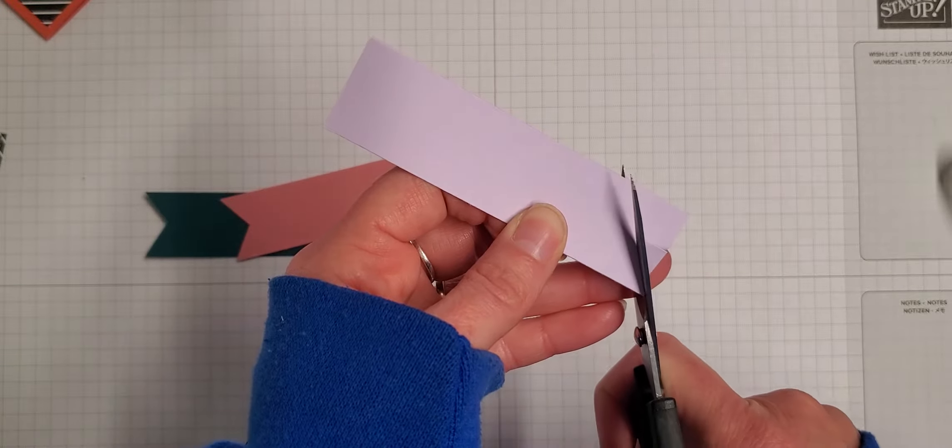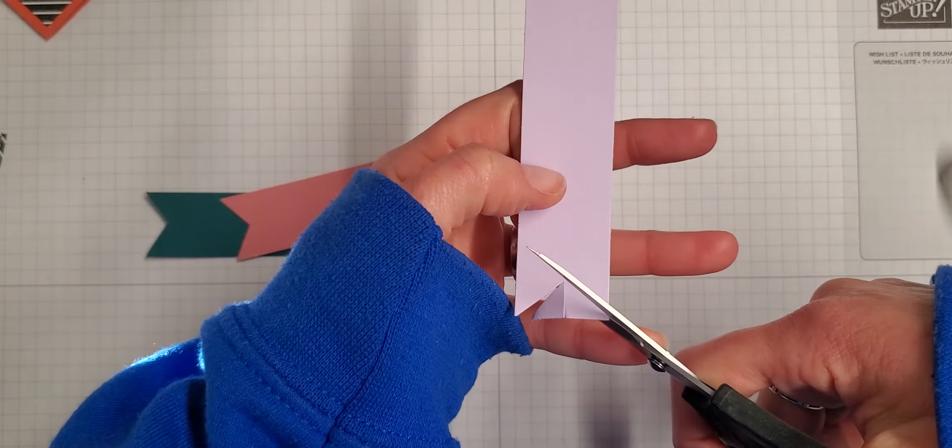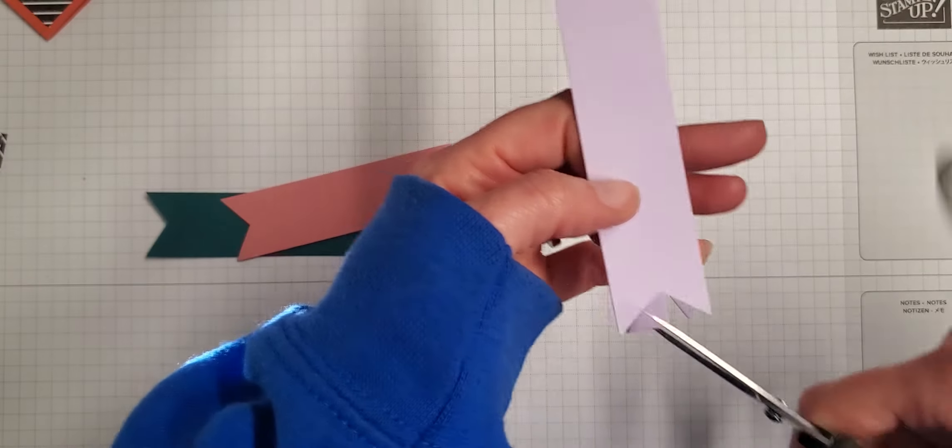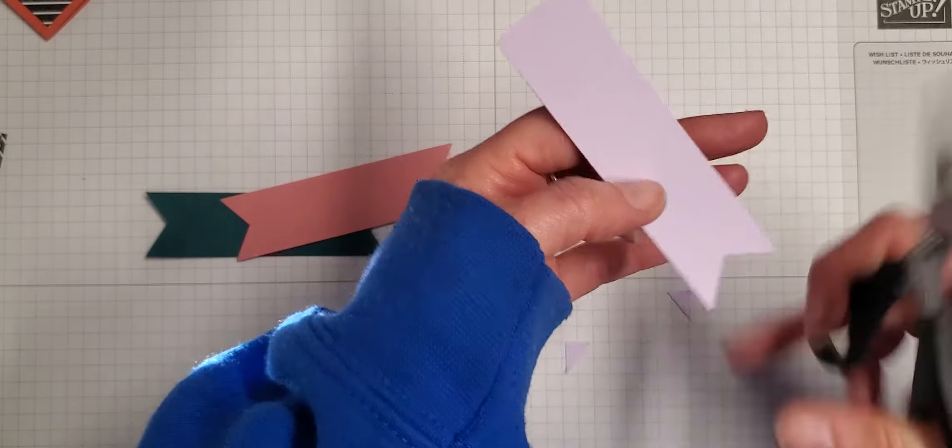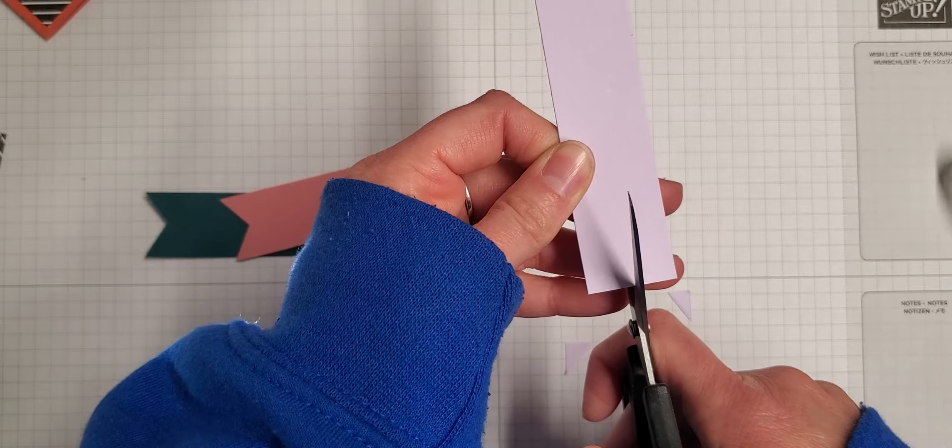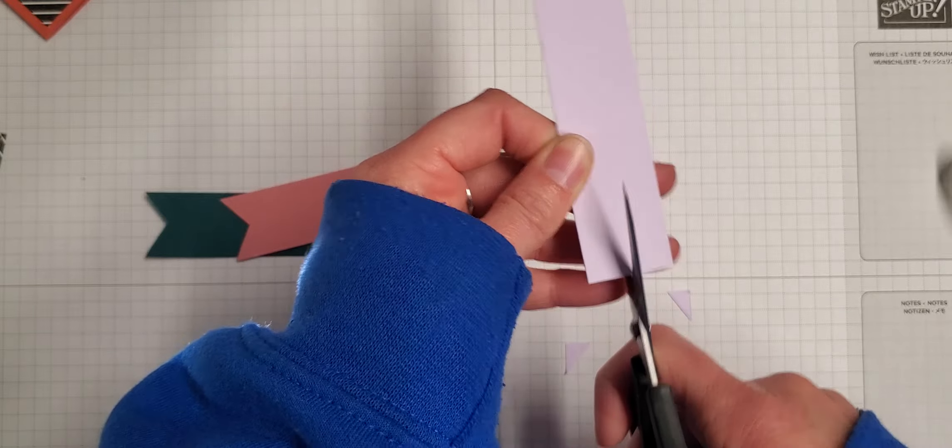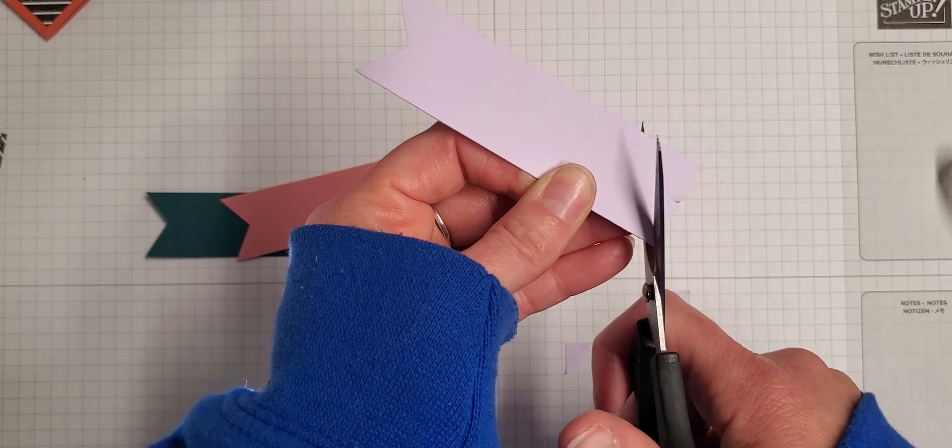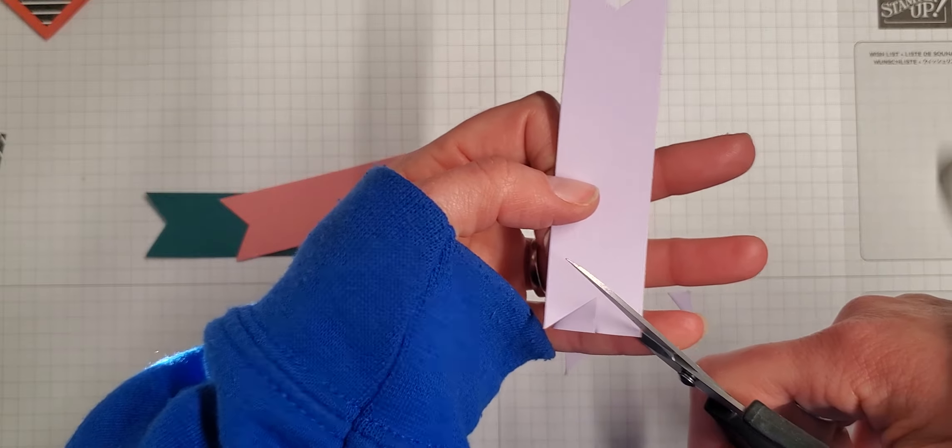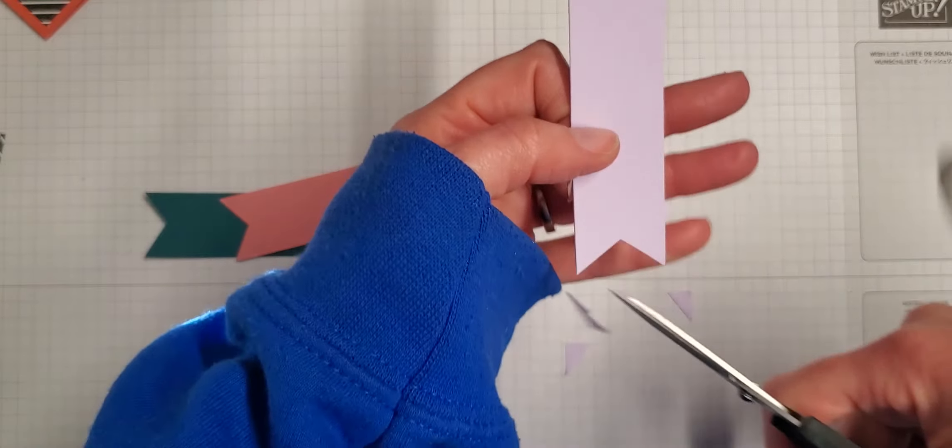And then we have Purple Posy. Now remember we had some issues with the Purple Posy ink pad so we don't have an ink pad or refill for this color, but we do have everything else—the ribbon, the markers, the cardstock. It's just the ink pad and refill.